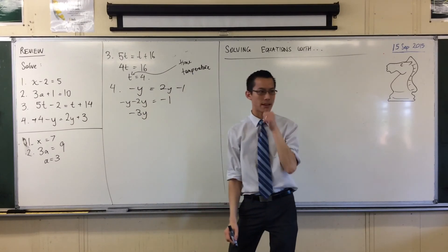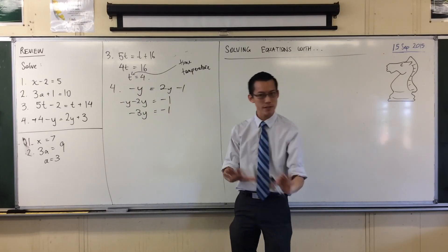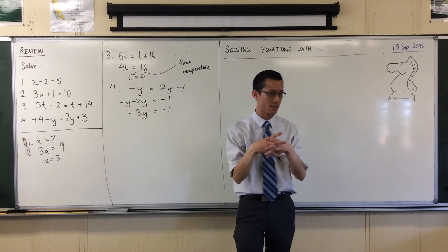It'll be minus 3y. Minus 3y, that's equal to minus 1. That's really tricky. That's what makes these questions hard with these negatives flying around and how they interact. Okay?